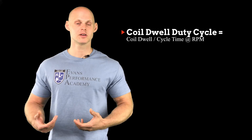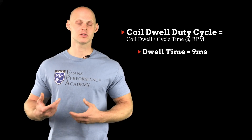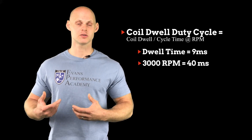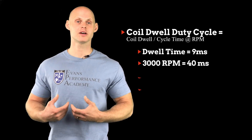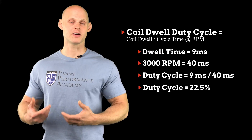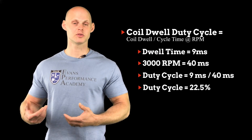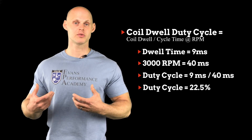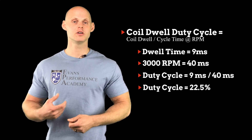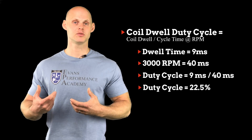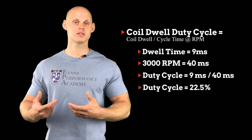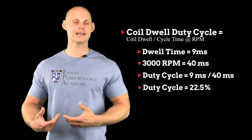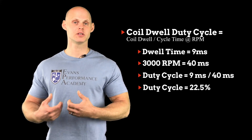For example, if we put nine milliseconds into this equation at 3,000 RPM — which takes 40 milliseconds of total cycle time — we get a duty cycle of 22.5%. That's under the 40% duty cycle limit, so if we have the ability to populate a three-dimensional table based on engine RPM, we can confidently fill out the table up to 3,000 RPM and run nine milliseconds, because this coil can run continuously at that dwell below 40% duty cycle.